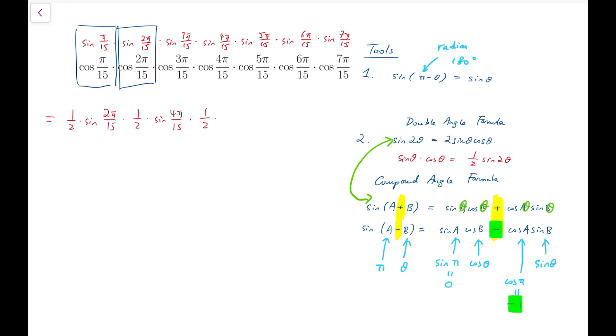That's another half times sine of 4 pi over 15. Using a similar argument, I will get lots of halves multiplying together, and then the double angles, which are 2 pi, 4 pi, 6 pi, 8 pi, 10 pi, 12 pi, and finally 14 pi, each multiplied by a half.